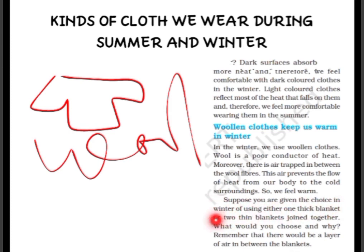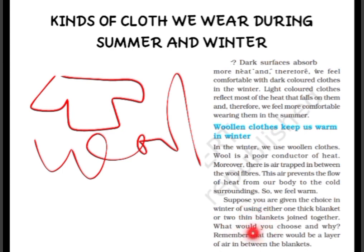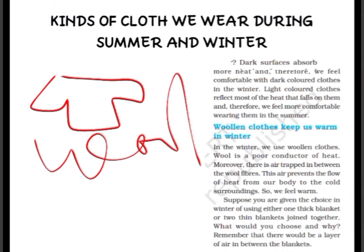Suppose you are given a choice in winter between one thick blanket and two thin blankets joined together — which would you choose? You would always choose the thick blanket, because it will not allow heat to pass through easily. Also remember, there should always be a layer of air between two blankets. I hope you have understood the topic well. In our next class we will be studying a new chapter. Thank you.